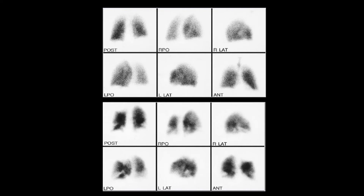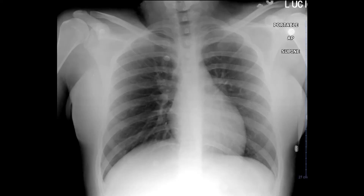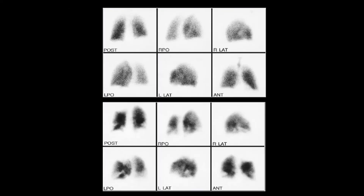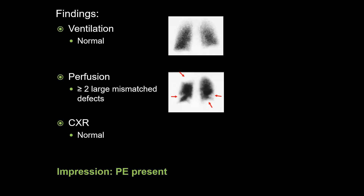In this case, DTPA ventilation images in multiple projections are displayed on the top with corresponding perfusion images below. A comparison chest radiograph is available on the next slide. Take some time to review the images. There are no significant ventilation defects. There are numerous moderate to large mismatched perfusion defects involving both lungs, with the largest defect involving the left upper lobe. The chest radiograph is normal. The constellation of findings classify this study as PE present.